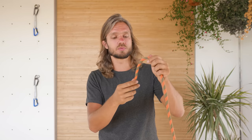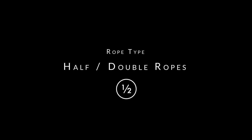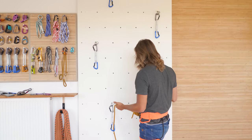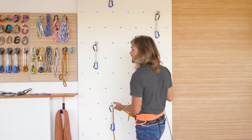Single ropes range from 9 to 10 millimeters in thickness. Next, we have half ropes, marked as a half in a circle — also sometimes called double ropes. They are thinner and lighter than single ropes, but you need two of them to go climbing. When climbing with half ropes, you need to clip them in an alternating pattern.